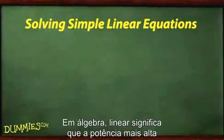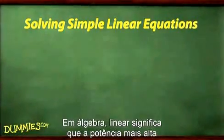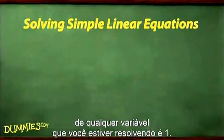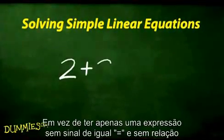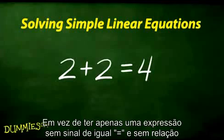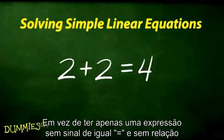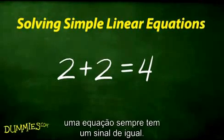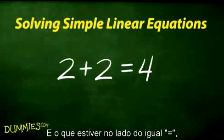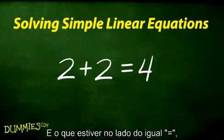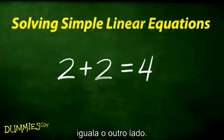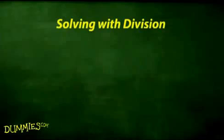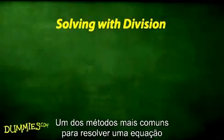In algebra, 'linear' means that the highest power of any variable you're solving for is one. Instead of having just an expression with no equal sign, an equation always has an equal sign — it states that whatever is on one side of the equal sign equals the other side.